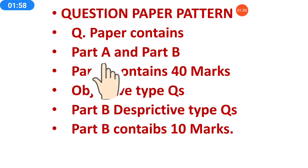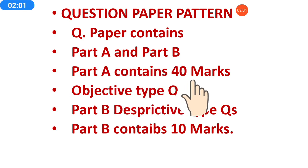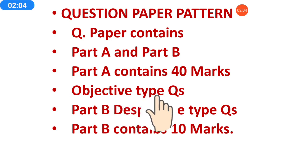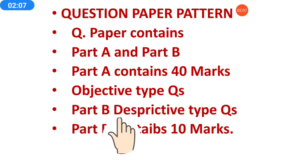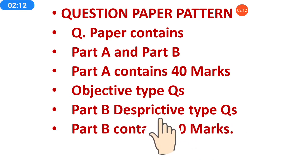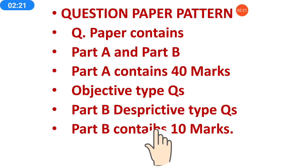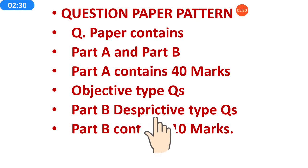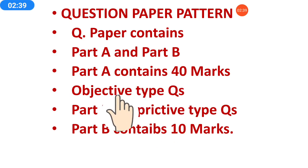The question paper is divided into two parts: Part A and Part B. Part A is of 40 marks, and in Part A, all the questions will be of objective type. Then Part B will be of descriptive type questions, meaning you have to write descriptive answers. Part B contains 10 marks. So objective type is 40 marks and descriptive type is 10 marks.